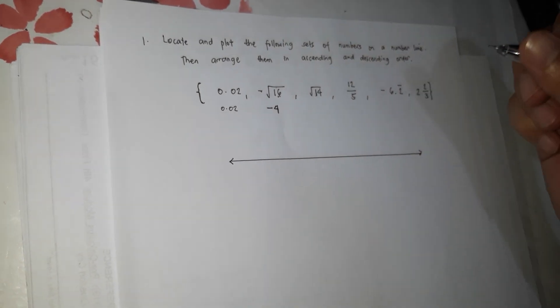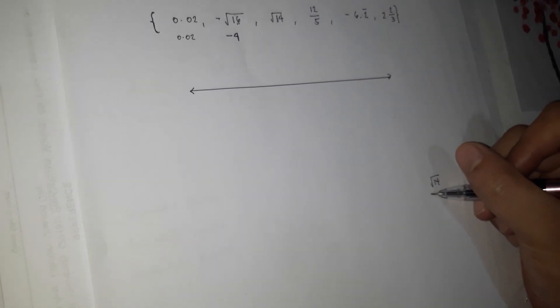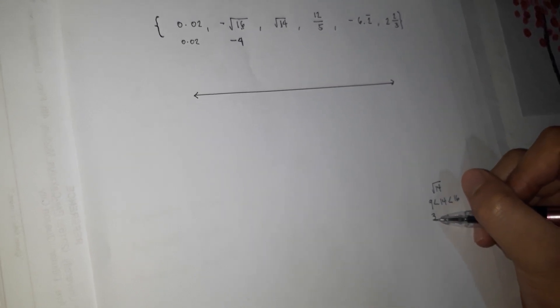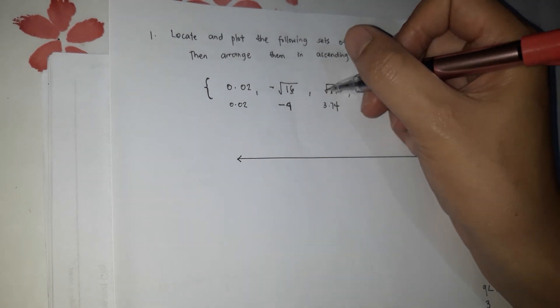Square root of 14 — the square root of 14 is between 9 and 16, since 3×3=9 and 4×4=16. So the square root of 14 is between 3 and 4, and if we estimate it, we come up with approximately 3.74.